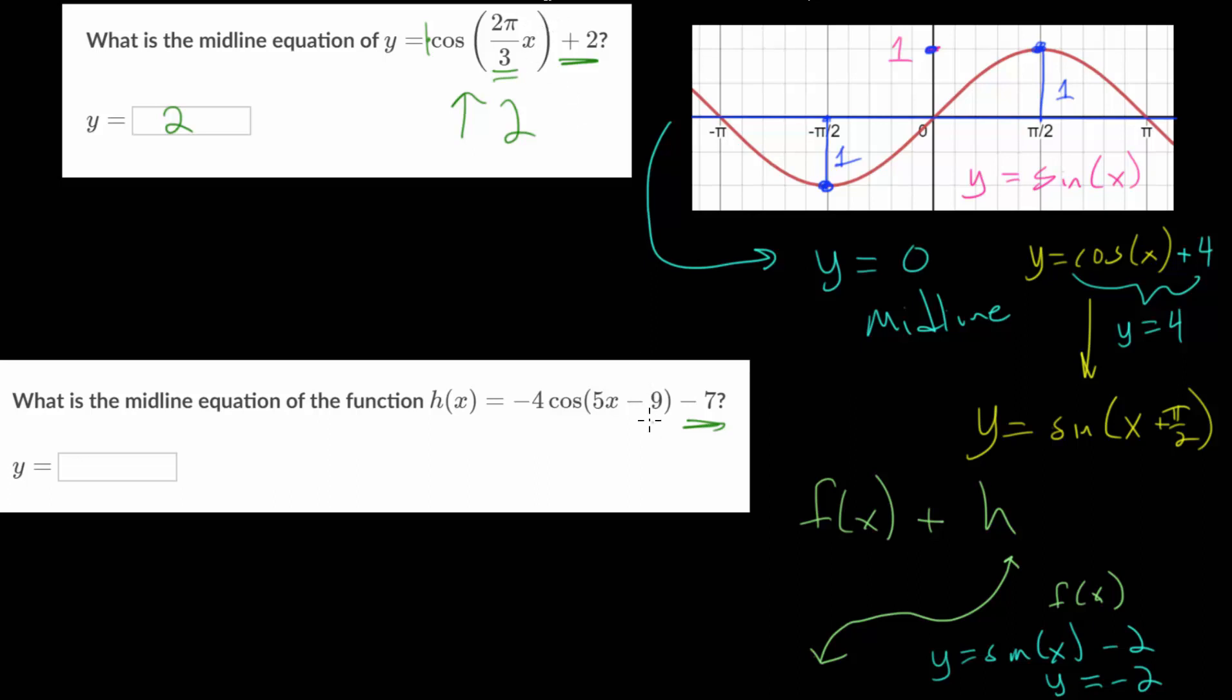And we can also add or subtract a number like we do here, and that will shift the function left or right like we had in this identity here. So each of these numbers plays a role in transforming the function. But for our purposes, we're mainly just concerned with what we are adding or subtracting on the outside to figure out the midline.